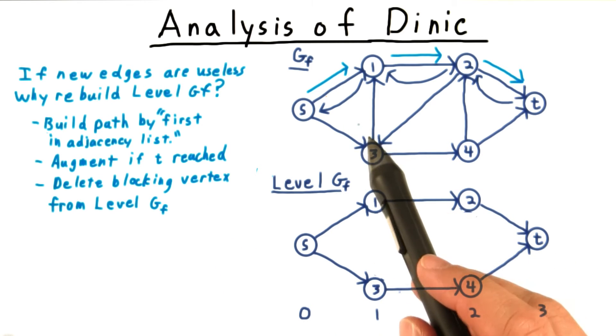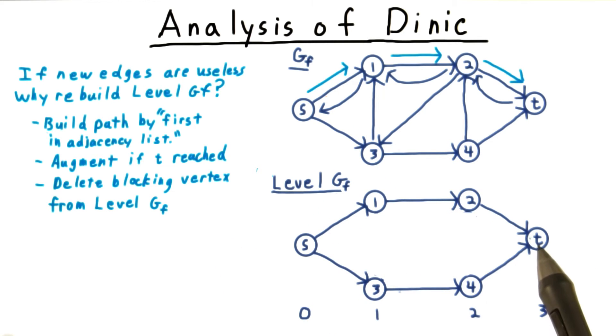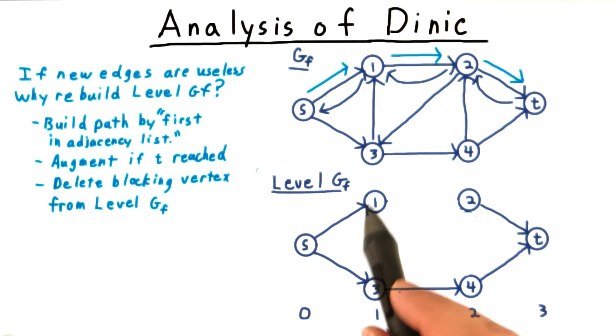In this example, we would first find a path from s to t, and let's say that this edge here is a bottleneck. Its capacity gets set to 0, and it gets deleted. Next, we would build a path from s again, and this time we would run into a dead end. So we delete this vertex and continue.